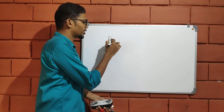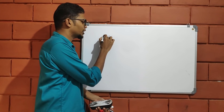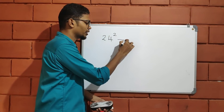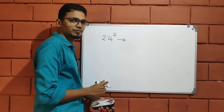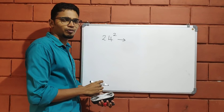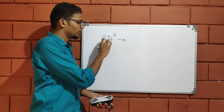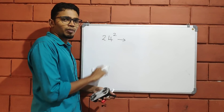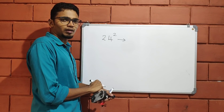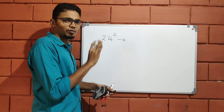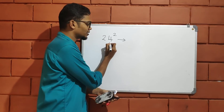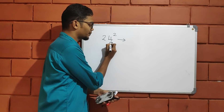For example, what are two-digit numbers? If you want to write a number of squares, you can write this number of squares.